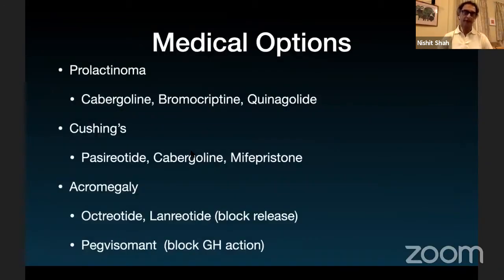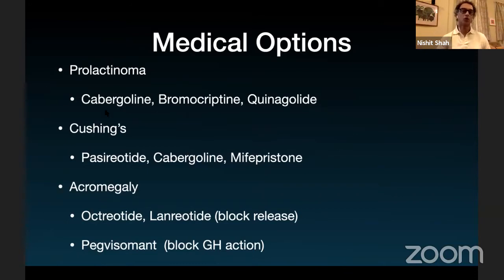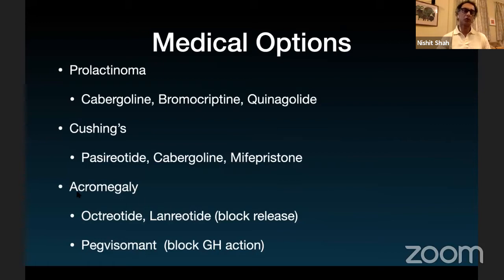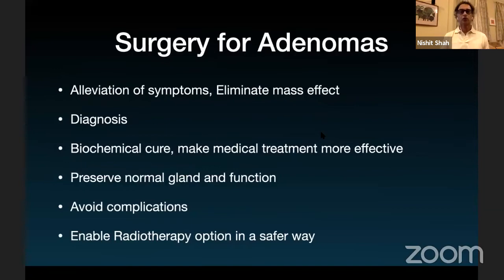When it comes to treatment of adenomas, you have medical and surgical options. For prolactinomas, medical options are the mainstay of treatment — cabergoline, bromocriptine, or quinagolide, usually cabergoline. For Cushing's and acromegaly, though medical treatment exists, it is not very effective and we would use it sparingly before proceeding to surgery.